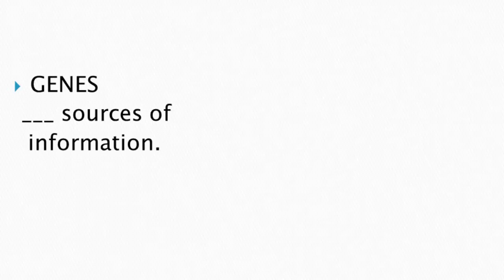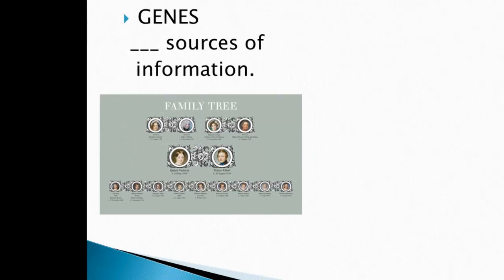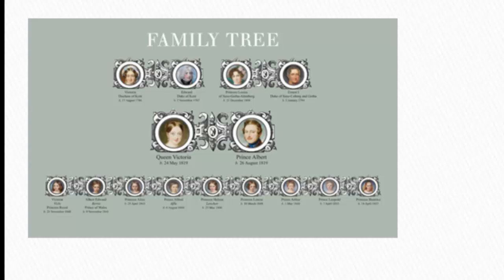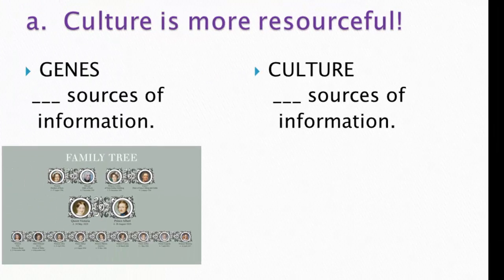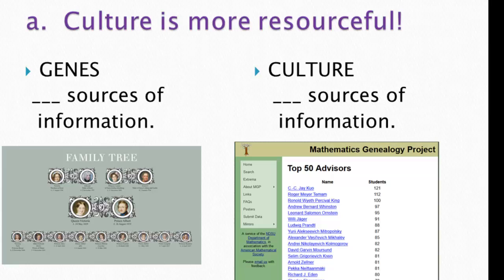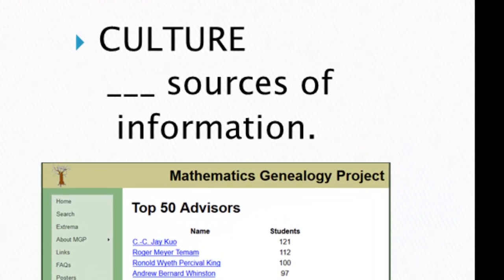First, genes have limited sources of information relative to culture. Looking at Queen Victoria's family tree, in each generation there are just two sources of information — two parents, the egg and the sperm — in a sexually reproducing organism like humans. Culture, on the other hand, has many more sources of information — whoever we learn from. We could say culture is more resourceful: it increases the range of information available that might influence our behavior.